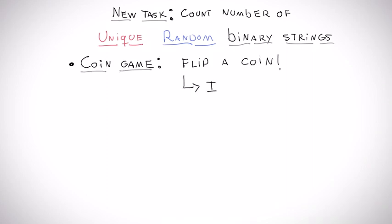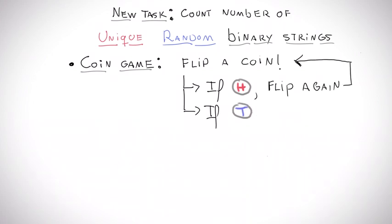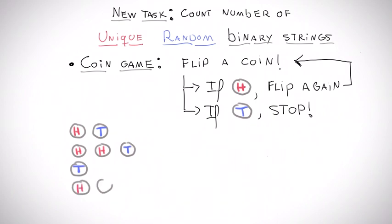We flip a coin. If it turns head, we flip it again. And we keep doing this until we get a tail, when we restart the game from scratch. By playing this game repeatedly, we get many coin flip sequences of different sizes.